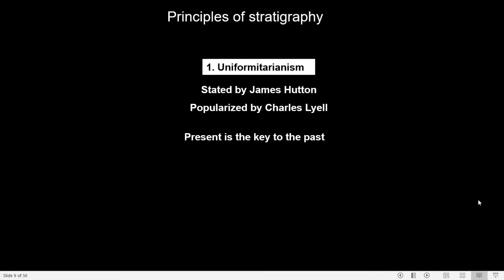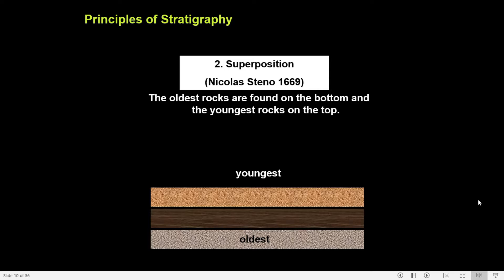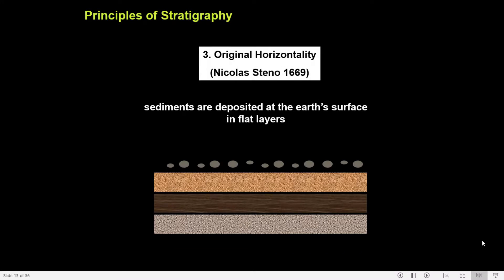The next principle is the principle of superposition. It was stated by Nicholas Steno in 1669. It states that in an undisturbed succession, the beds decrease in age from bottom to top. The first bed laid down will be the oldest, at the bottom, and as we move from bottom to top, the age of the bed decreases.